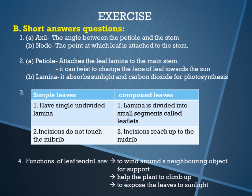The second question gives the function of the petiole. I have written: it attaches the leaf lamina to the main stem. The second function is it can twist to change the face of the leaf towards the sun — wherever sunlight is available, that side the leaf turns with the help of the petiole.